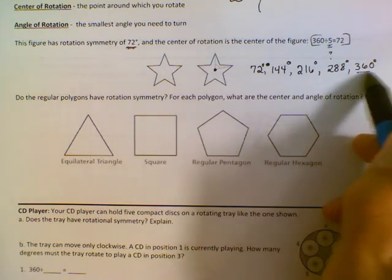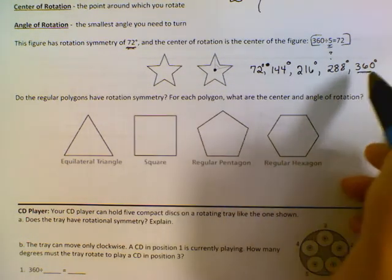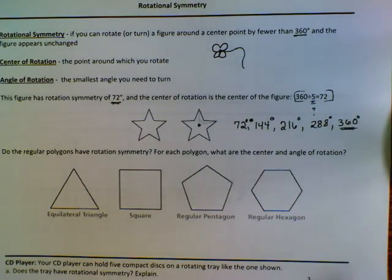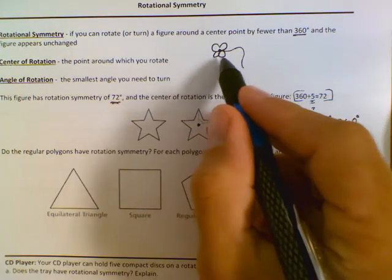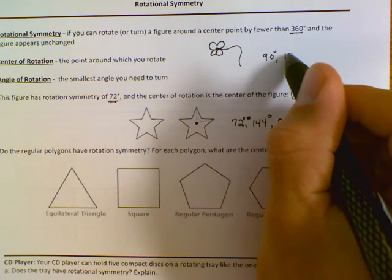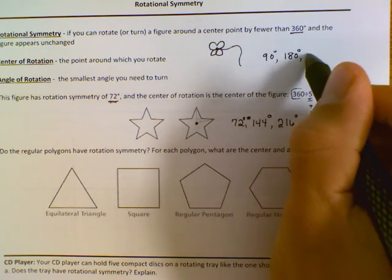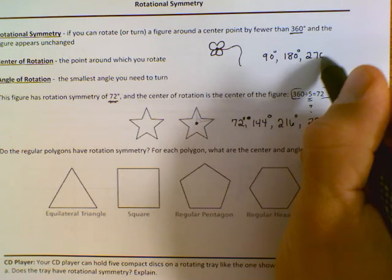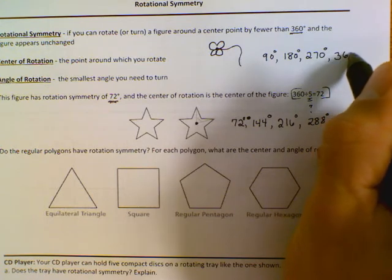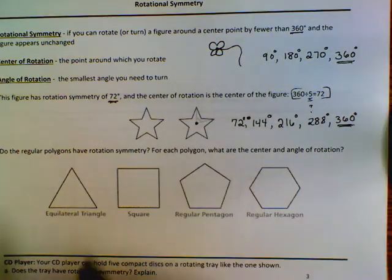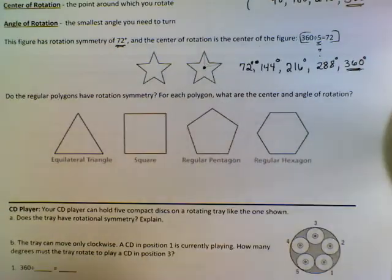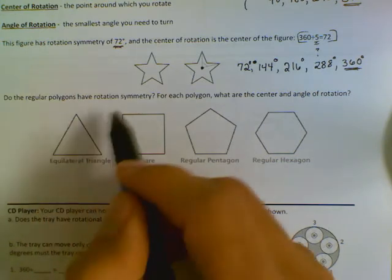360 is always going to be on our list, and when we get to 360 we stop. Going back to our four-leaf clover: I mentioned 90 degrees but never wrote down all the possibilities. So there's 90, 180, 270 degrees — and then we get to 360 and we stop.